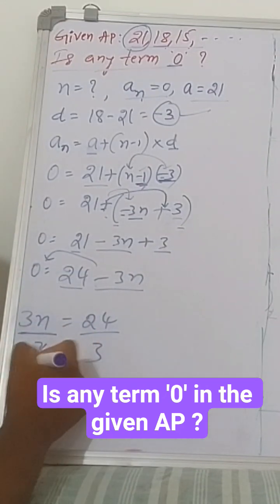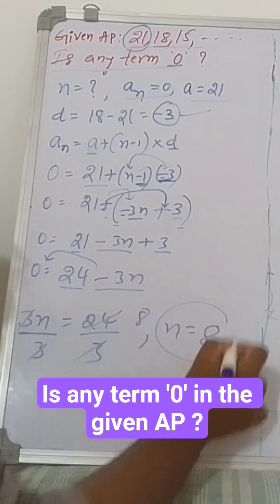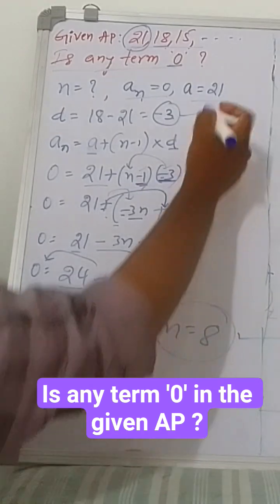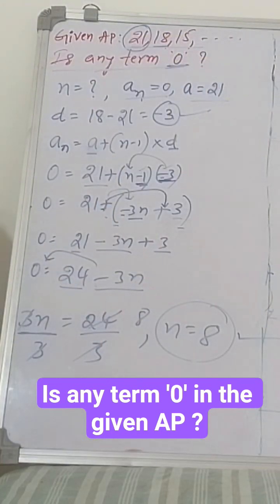3 cancels, so n equals 8. We got the answer. That means the 8th term is 0. This is the answer. Thank you.